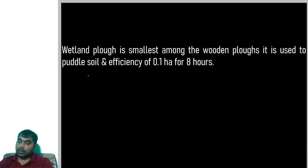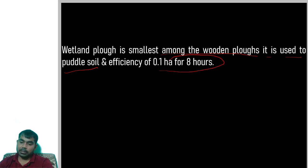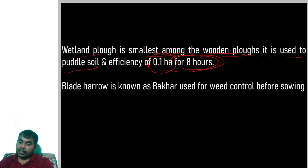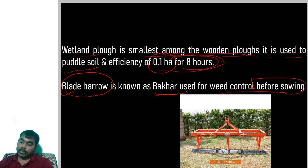The weight length plough is the smallest among wooden ploughs. It is used to puddle soil, and its efficiency is 0.1 hectare for 8 hours. Blade harrow is known as bhaakar and is used for weed control before sowing.